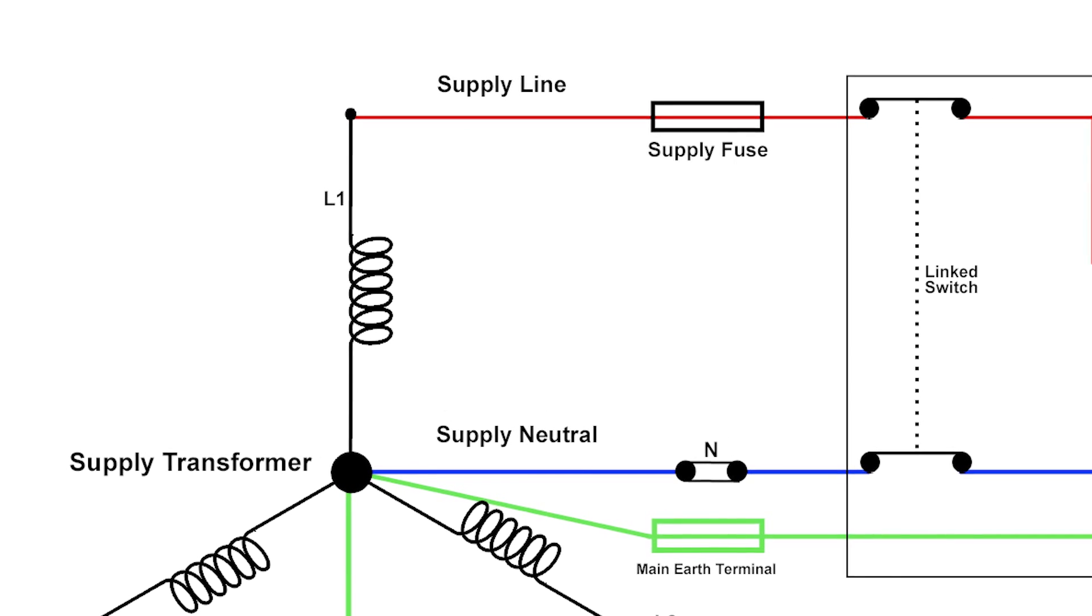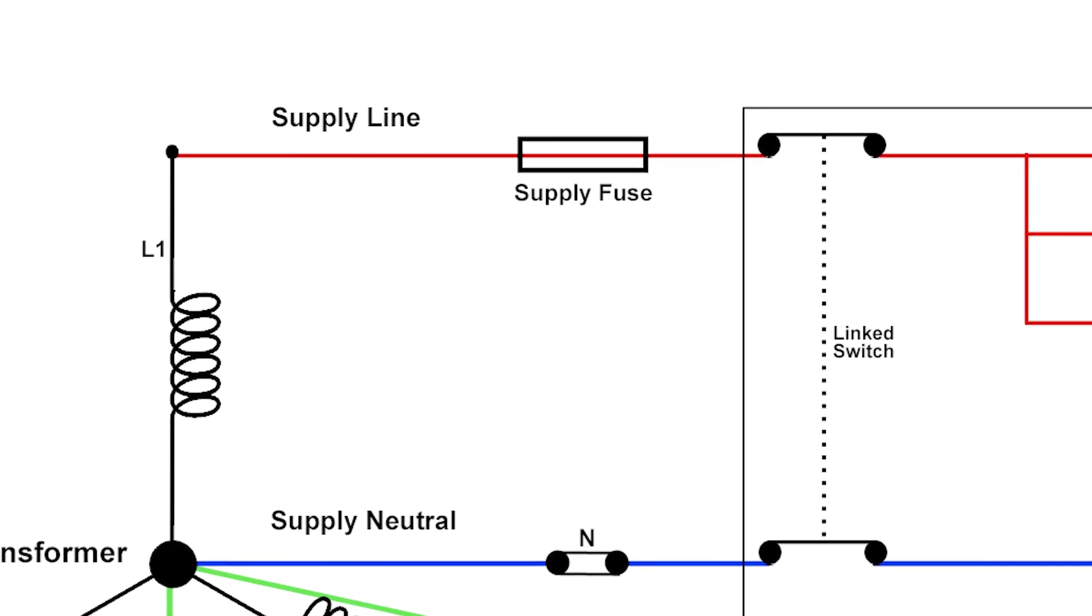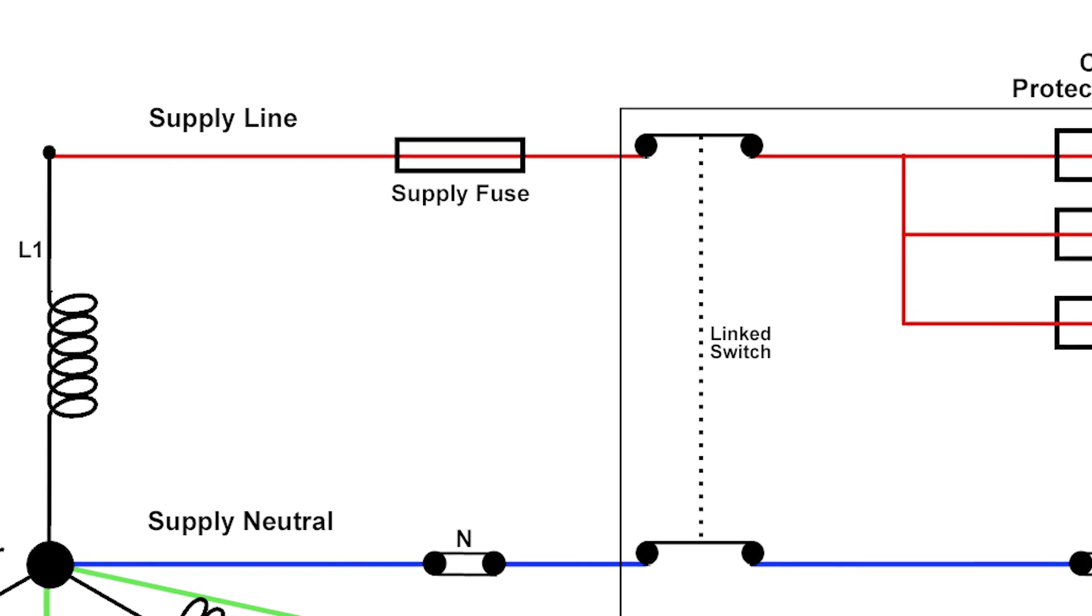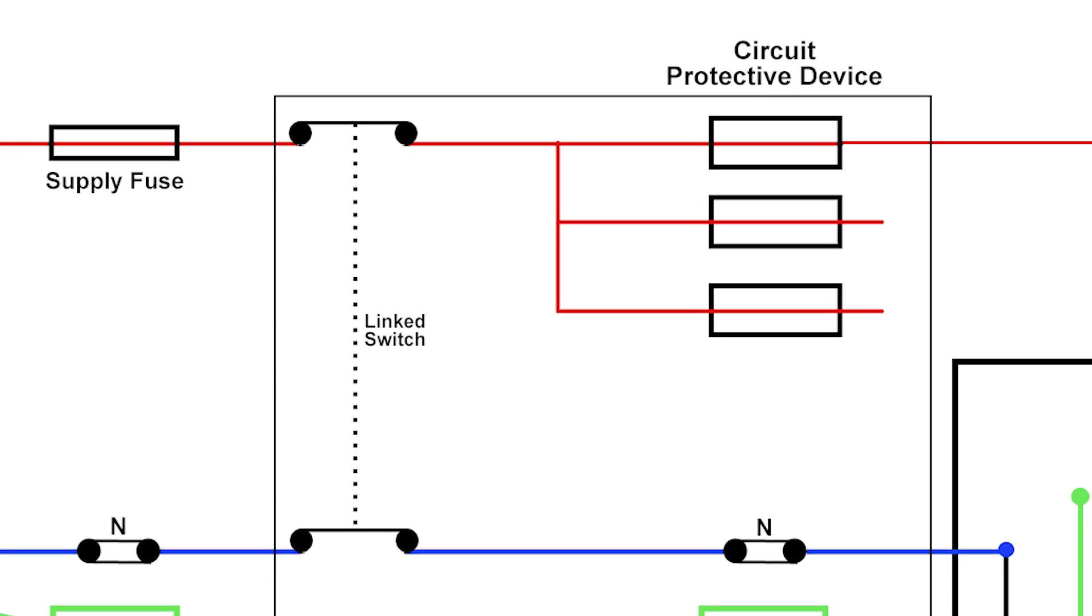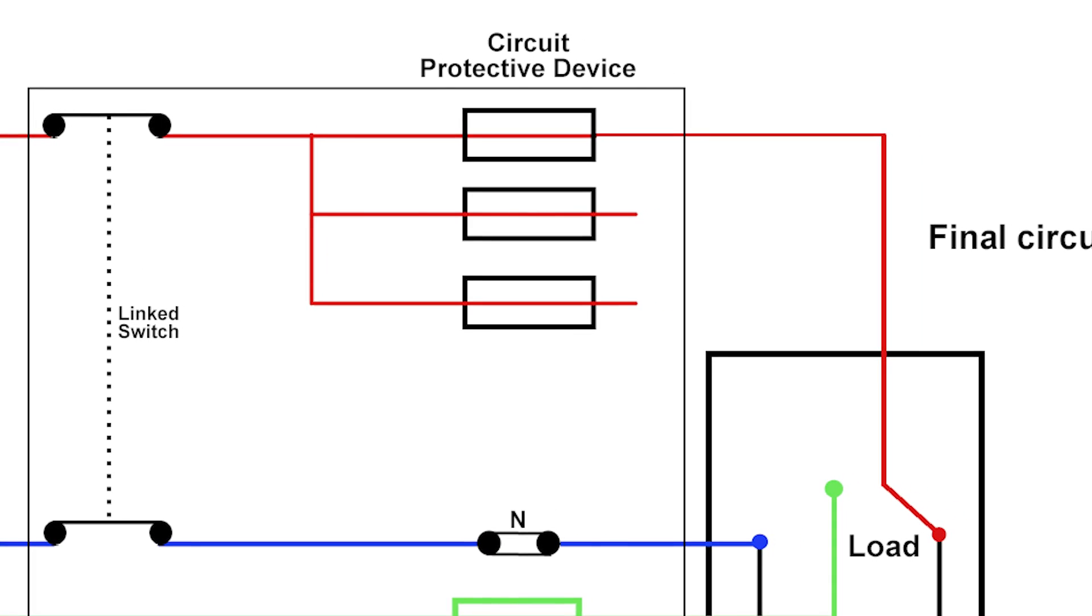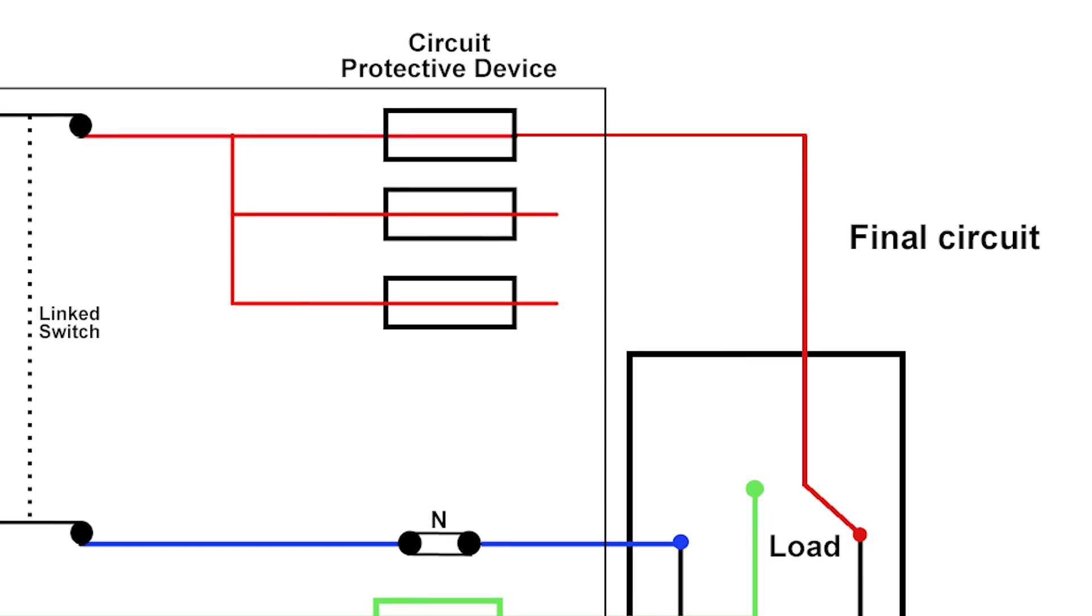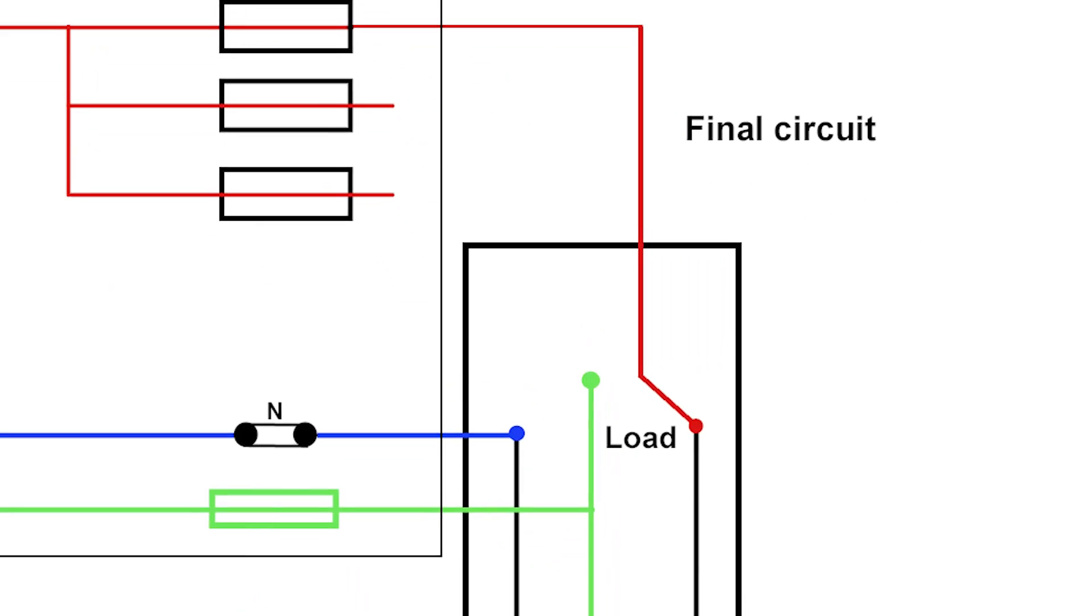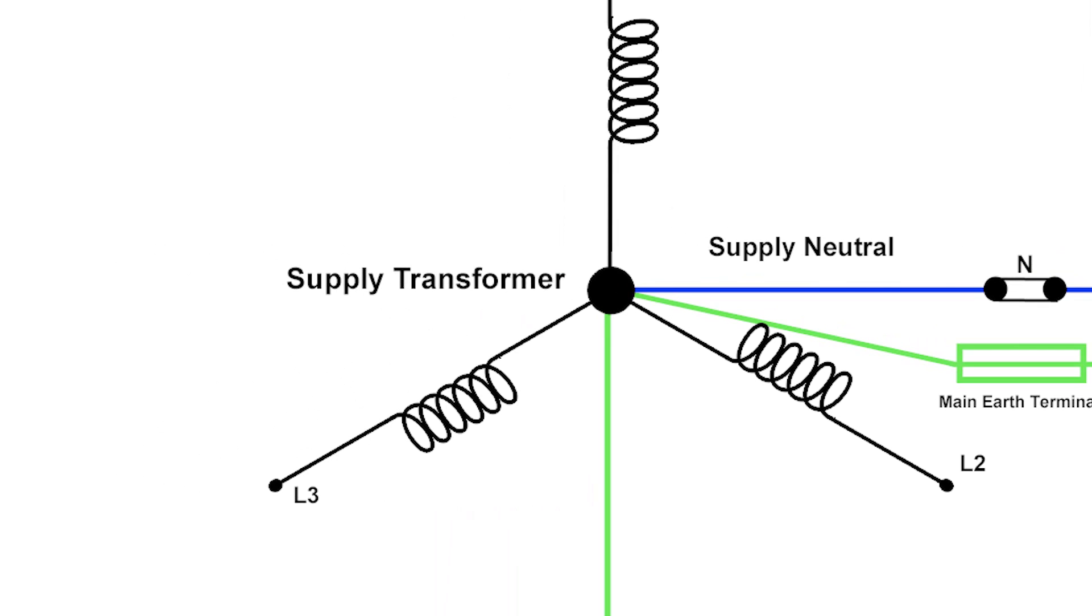Our current starts off at a pressure of 230 volts, flows into the building through this part of the system—this would be possibly our underground cable—then goes into a service head or a service fuse, through the service fuse to a main switch. Past the main switch we've got a consumer unit which will have a selection of protective devices in. If I connect a piece of equipment to the final circuit, the current will flow through the protective device, through the final circuit, through our piece of equipment, and through to the star point of our transformer, which is generally around zero volts.